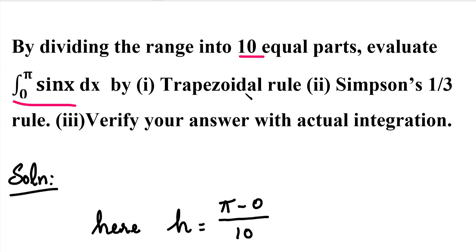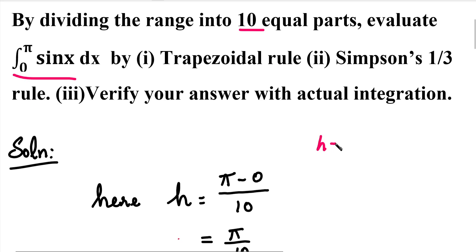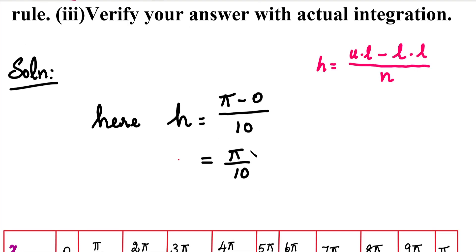To use trapezoidal rule and Simpson's rule, first we need the h value. The h value is defined as upper limit minus lower limit divided by n. n is the number of sub intervals. Here we divide the interval into 10 equal parts, so n equals 10. Now h equals π minus 0 divided by 10, so h equals π by 10.